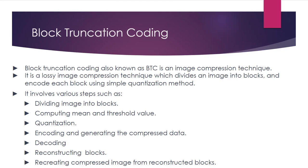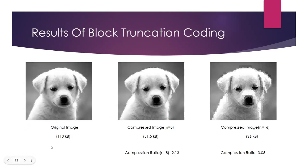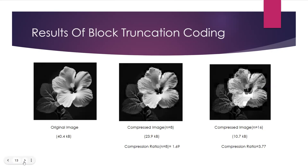We took two images and performed this compression technique with block size equal to 16 and then 8. For the initial image of 110 KB, compression with block size 16 yielded a compressed size of 36 KB, resulting in a compression ratio of 3.05. Using block size 8, the compressed size increased to 51.5 KB and the compression ratio decreased to 2.13. The second image, originally 40.4 KB, achieved a compression ratio of 3.77 with block size 16, producing a compressed size of 10.7 KB. However, using block size 8 for the same image led to a compressed size of 23.9 KB and a compression ratio of 1.69.